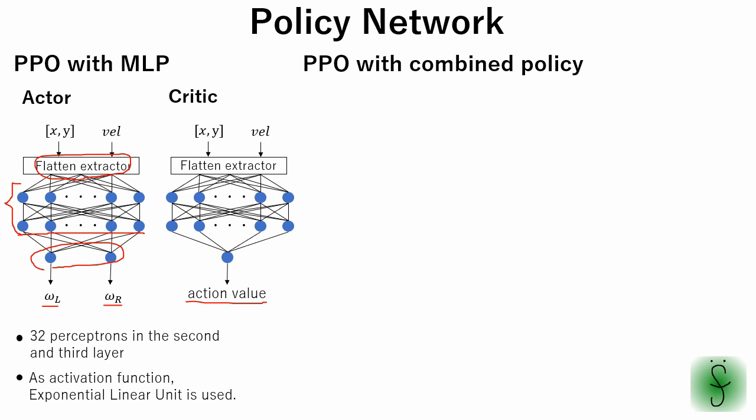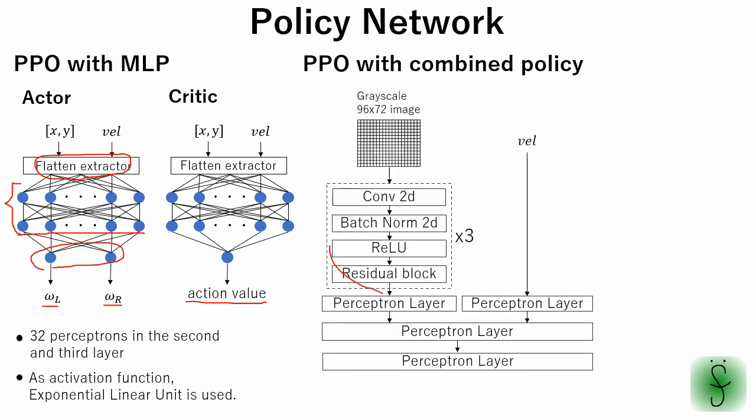In case of using an image as an observation input, things are more complicated. The image is processed by a convolutional neural network. The CNN consists of three structurally identical blocks but with different parameters. Each block consists of a convolution layer, the output of which is normalized, then processed using rectified linear unit. The output of the rectified linear unit is further processed in the residual block. In this architecture, pooling layers are not used.